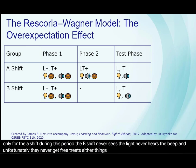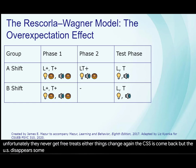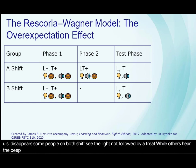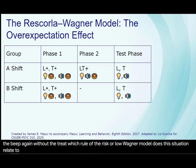Things change again. The CSs come back, but the US disappears. Some people on both shifts see the light not followed by a treat, while others hear the beep again without the treat. Which rule of the Rescorla-Wagner model does this situation relate to, and what does it predict will happen in this case?